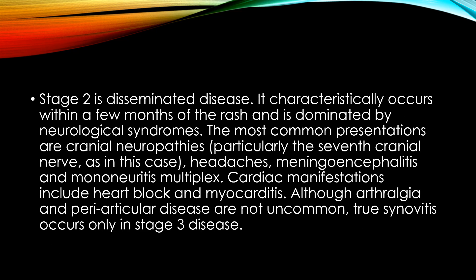Stage 2 is disseminated disease. It characteristically occurs within a few months of the rash and is dominated by neurological syndromes. The most common presentations are cranial neuropathy — particularly the 7th cranial nerve, as in our case — headaches, meningitis, encephalitis, and mononeuritis multiplex. Mononeuritis multiplex means more than one nerve in the same limb, such as median and ulnar of the same hand. Cardiac manifestations include heart block and myocarditis. Although arthralgia and periarticular disease are not uncommon, true synovitis occurs only in Stage 3 of the disease.